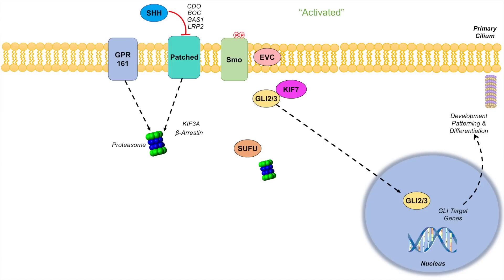In summary: when the hedgehog signaling pathway is inactivated, GLE proteins are proteolytically cleaved to their GLE-R repressor forms, which enter the nucleus and inhibit transcriptional activation. When the pathway is activated and hedgehog proteins are present, GLE proteins are not proteolytically processed, remain in their full forms, enter the nucleus, and activate GLE target genes.